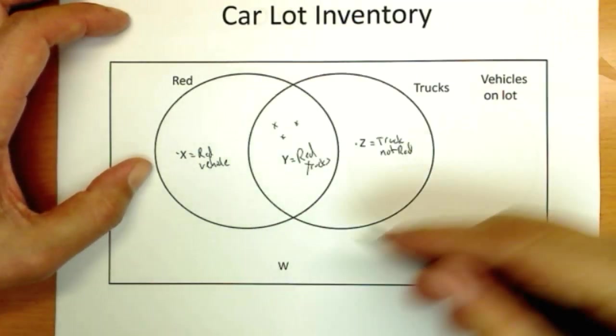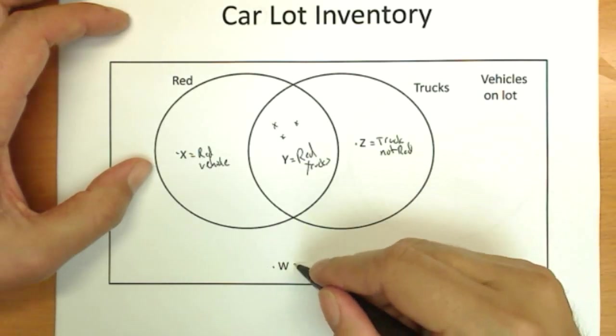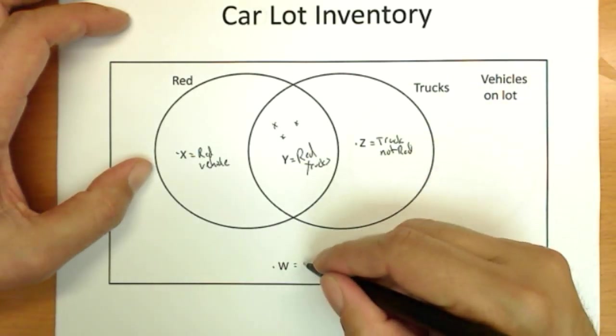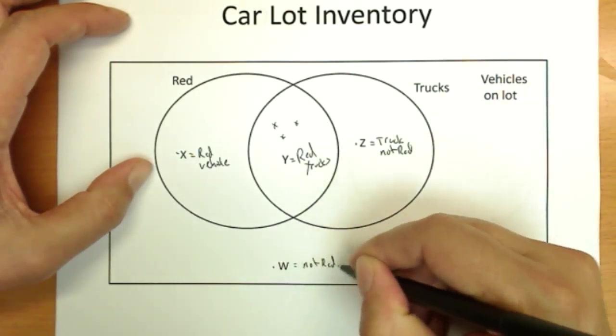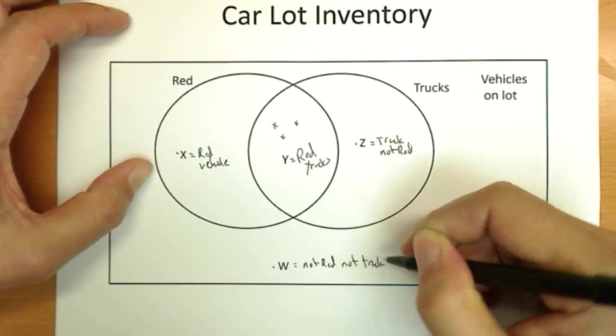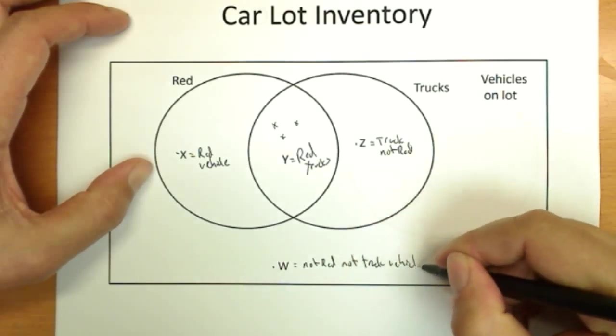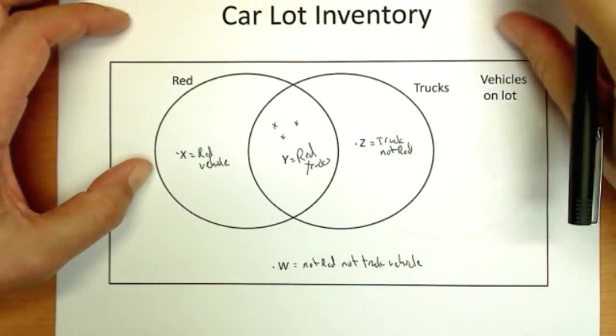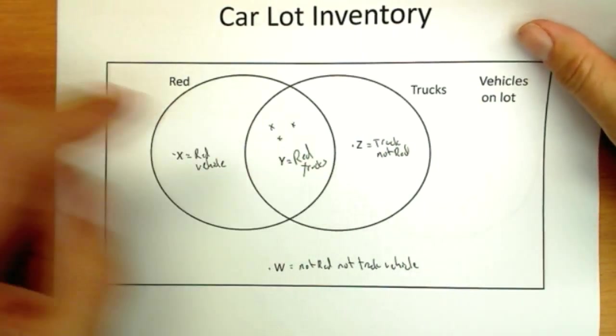Maybe a red motorcycle or a red car. And how about an item W outside here? Well, it's not a truck, and it's not red. So it's a not red, not truck vehicle. Yeah, it could be a yellow motor scooter. Who knows? But what we do know is it's not a truck, and it's not red.